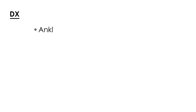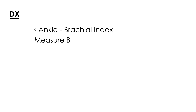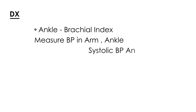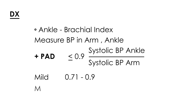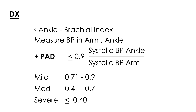The most important diagnostic test is the ankle-brachial index (ABI). You measure blood pressure in the arm and in the ankle, then take the ratio of the systolic ankle pressure over the systolic arm pressure. A value less than 0.9 is positive for PAD. The categories are: mild PAD is 0.71–0.9, moderate PAD is 0.41–0.7, and severe PAD is less than 0.4.